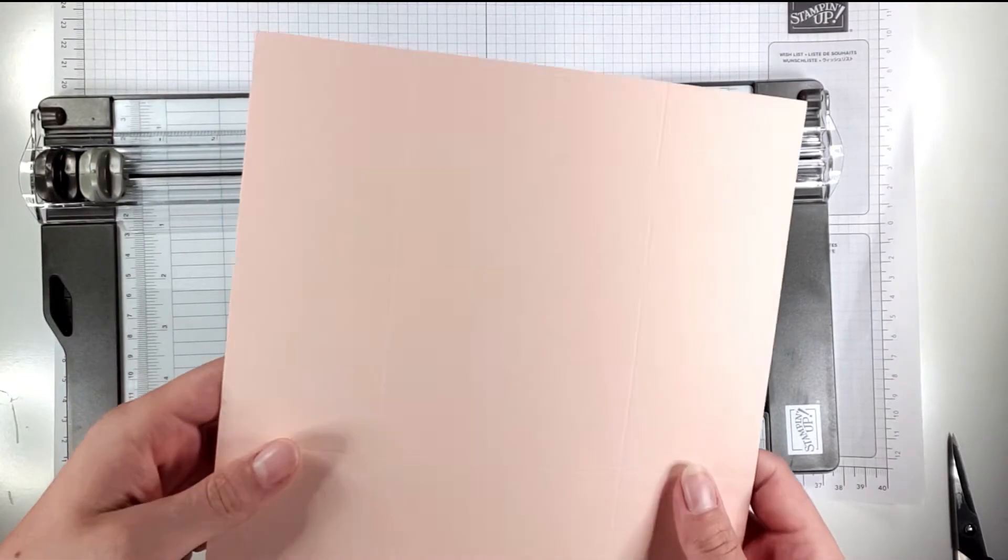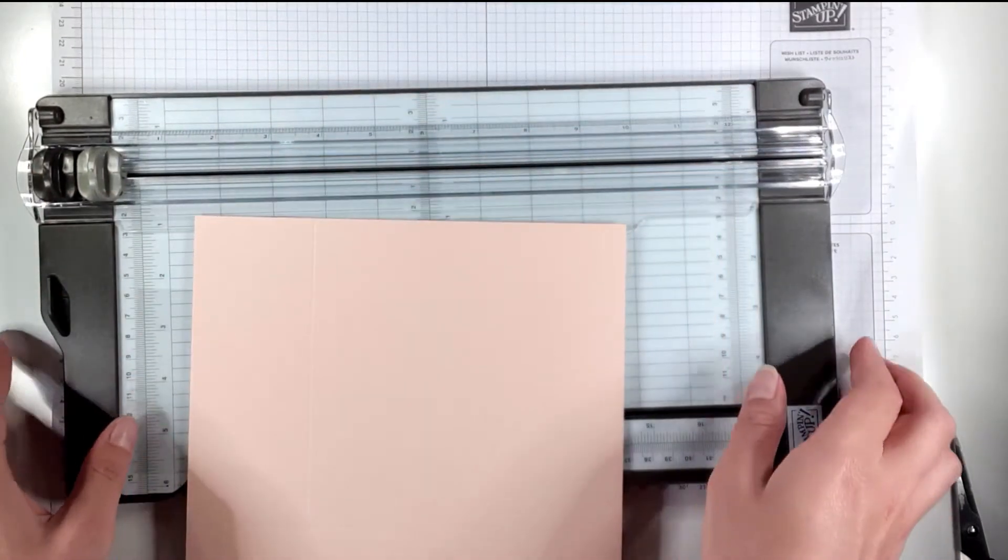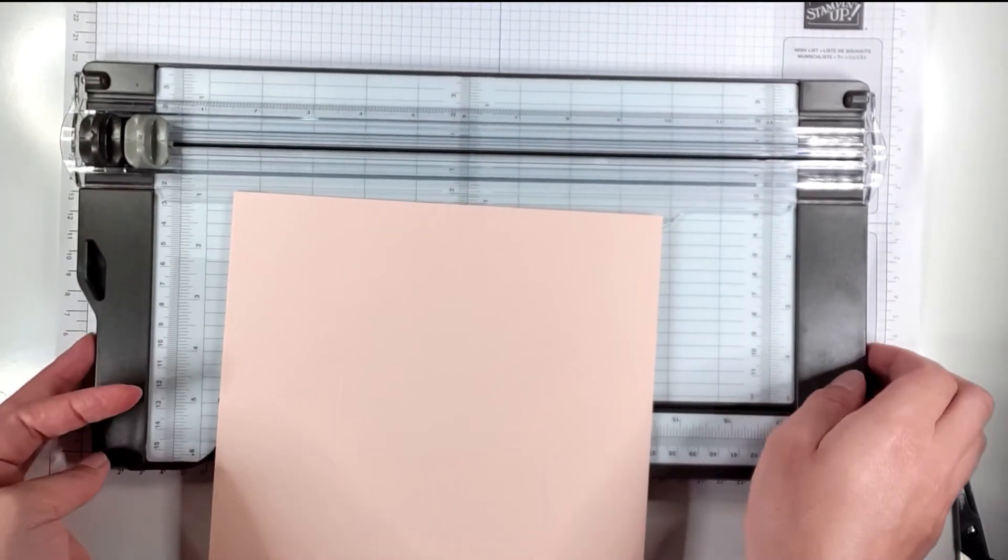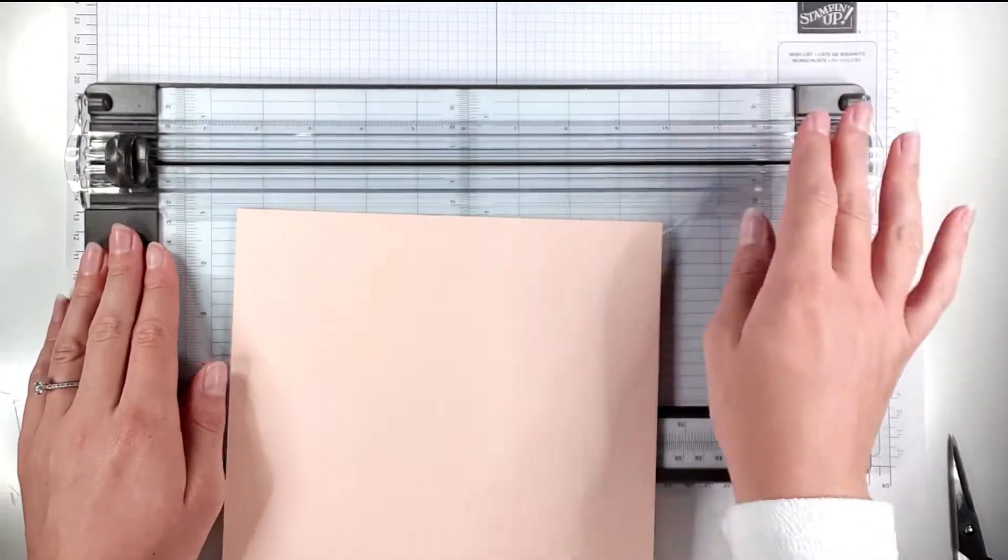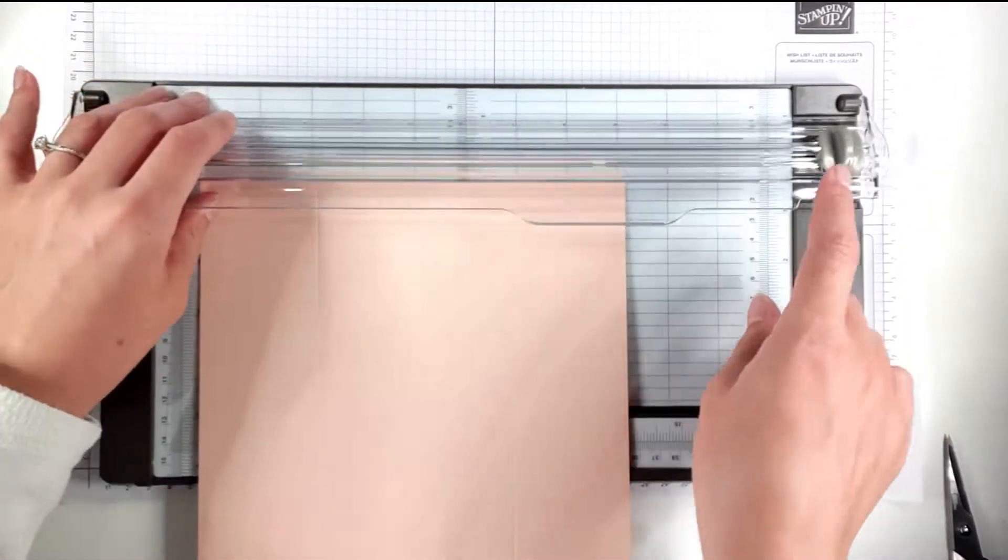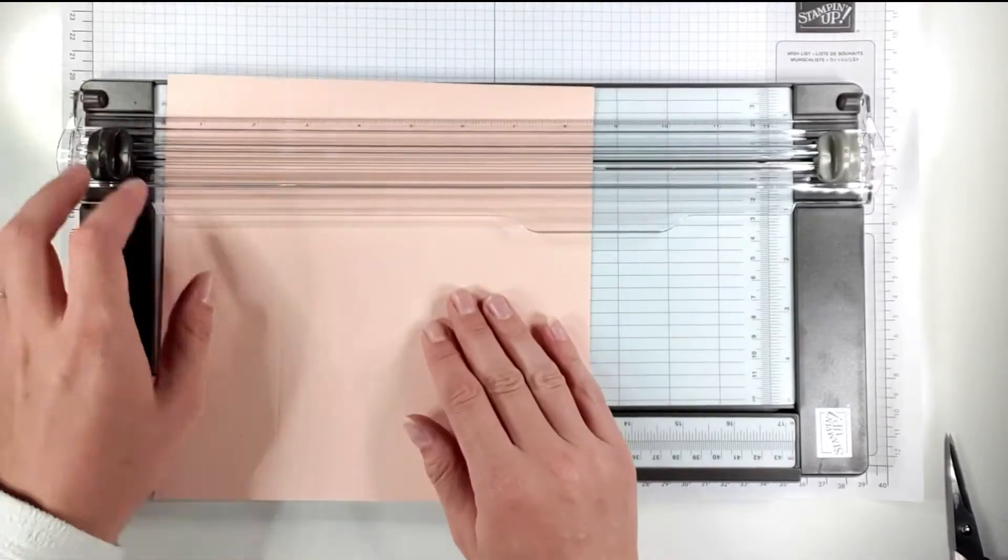Then we're taking back in the base and my trimmer - you can do this with a pair of scissors as well, I'm just using the trimmer for accuracy. If you don't have a scoreboard and you've got a trimmer like this you could use the trimmer for the scoring as well.